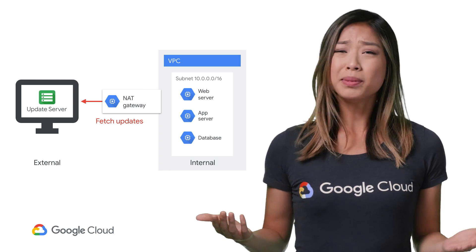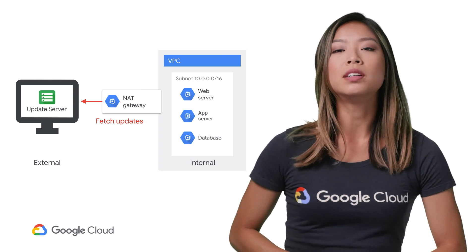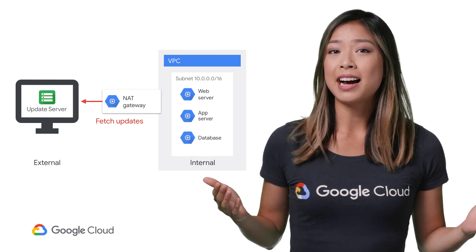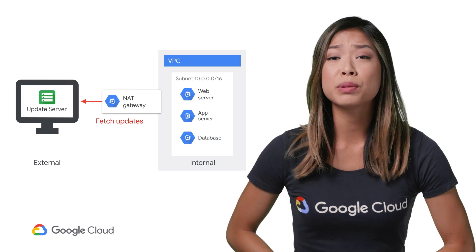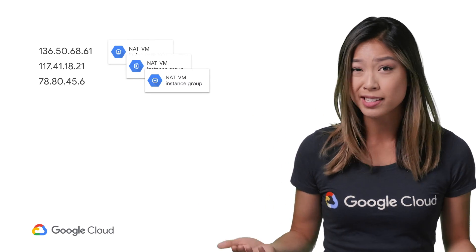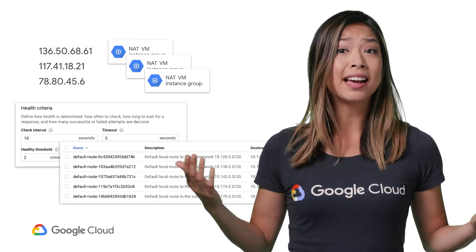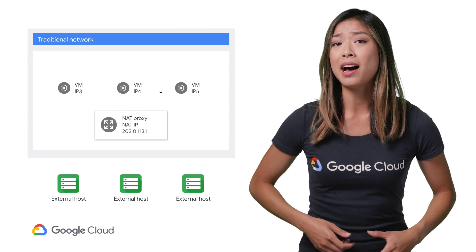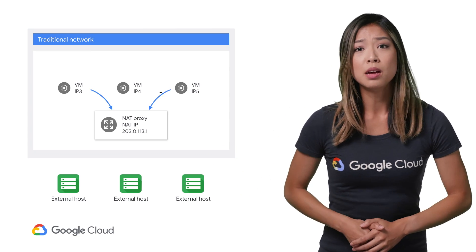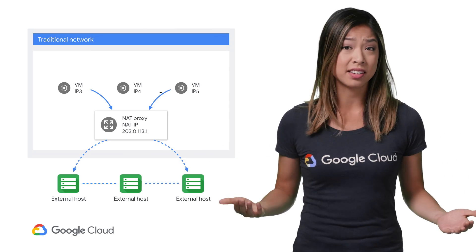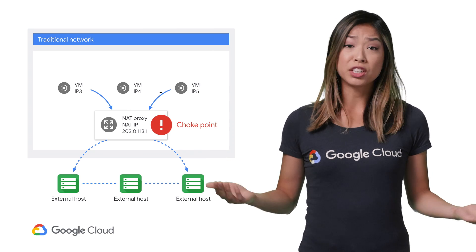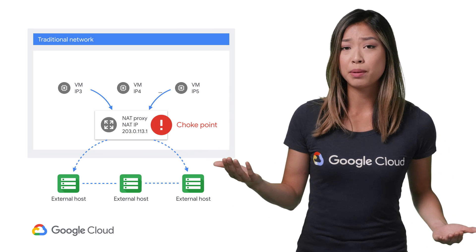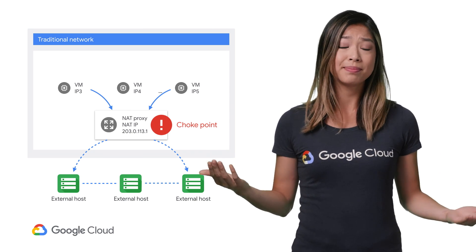Now, normally, this requires a fair bit of toil. Building a high availability and high bandwidth NAT gateway usually requires reserving static IP addresses, creating compute instance groups as the NAT gateways, creating health checks to monitor their responsiveness, and adding default routes to these instances. And with traditional NATs, you'd have a NAT proxy instance between your cloud instances and their destination. This means a potential choke point in the path, undermining performance, throughput, and availability.